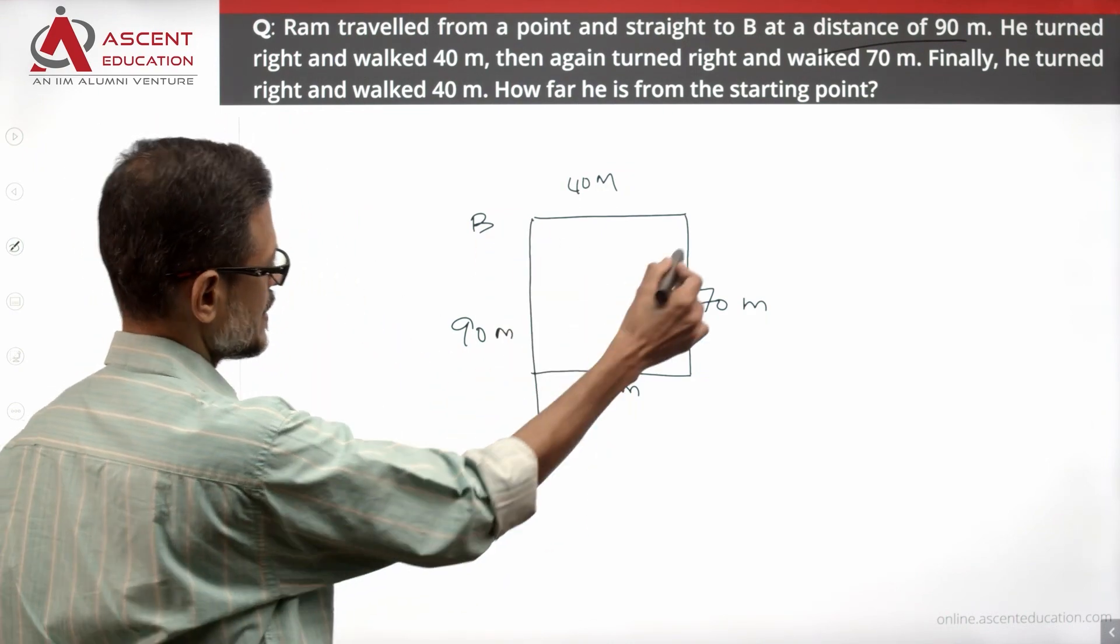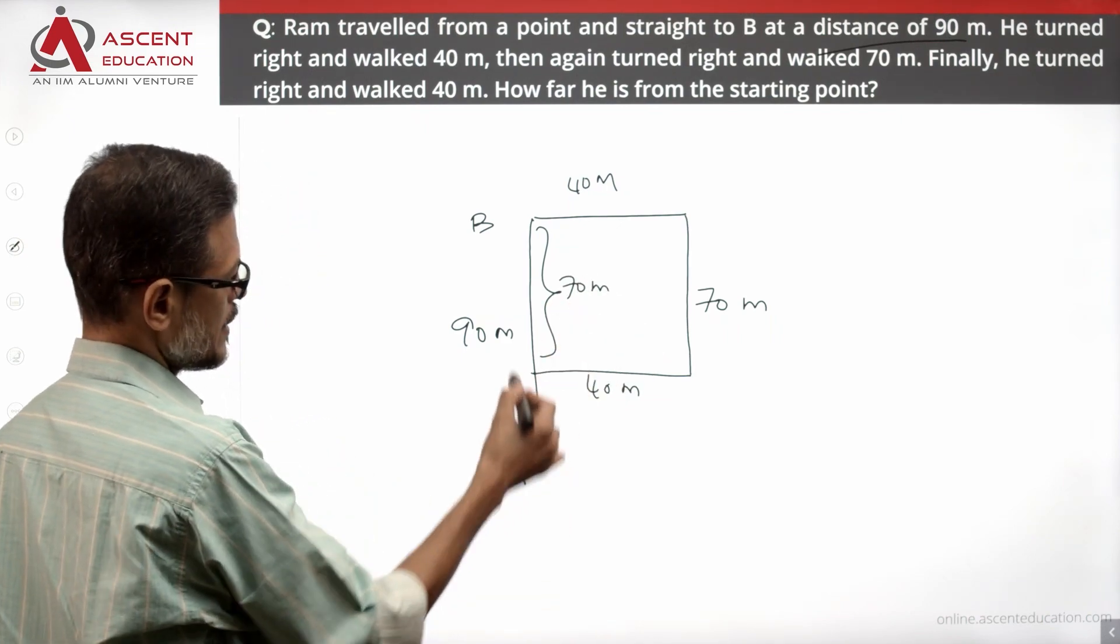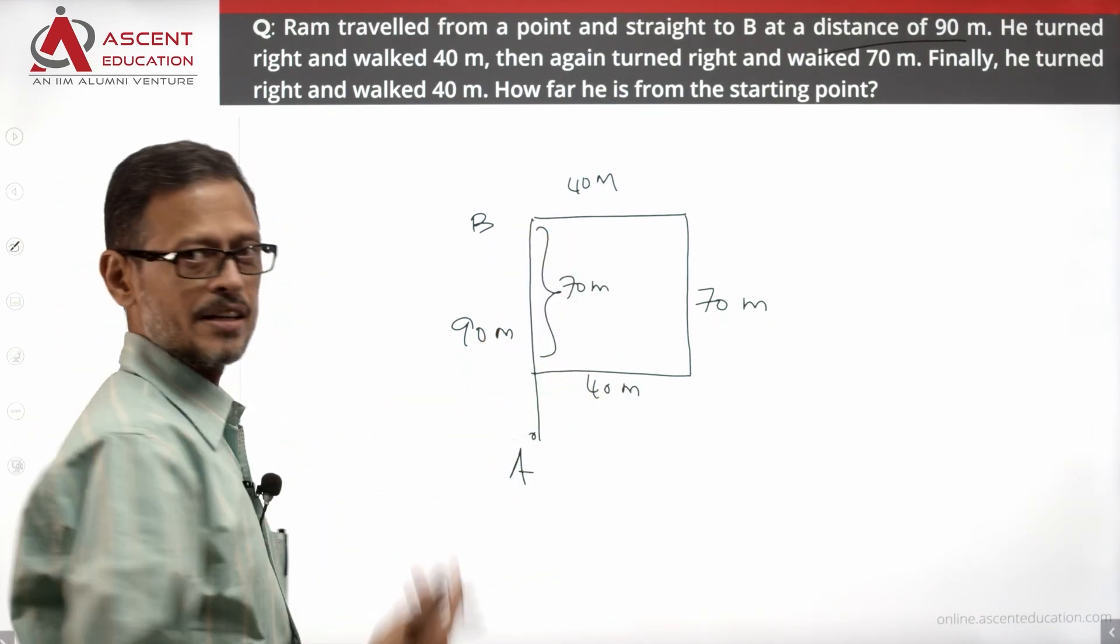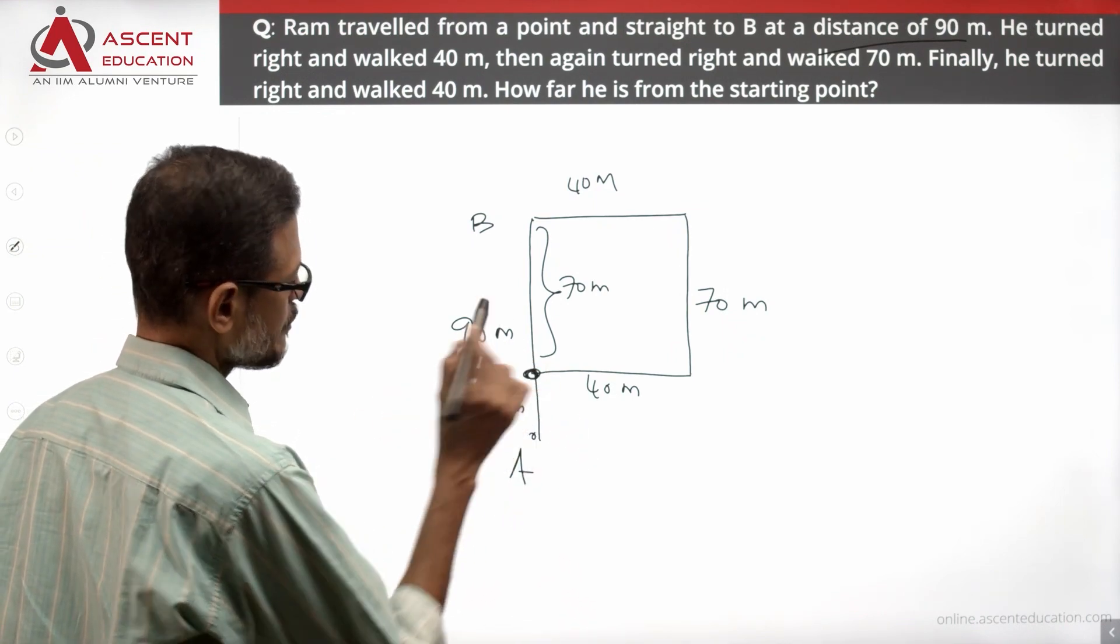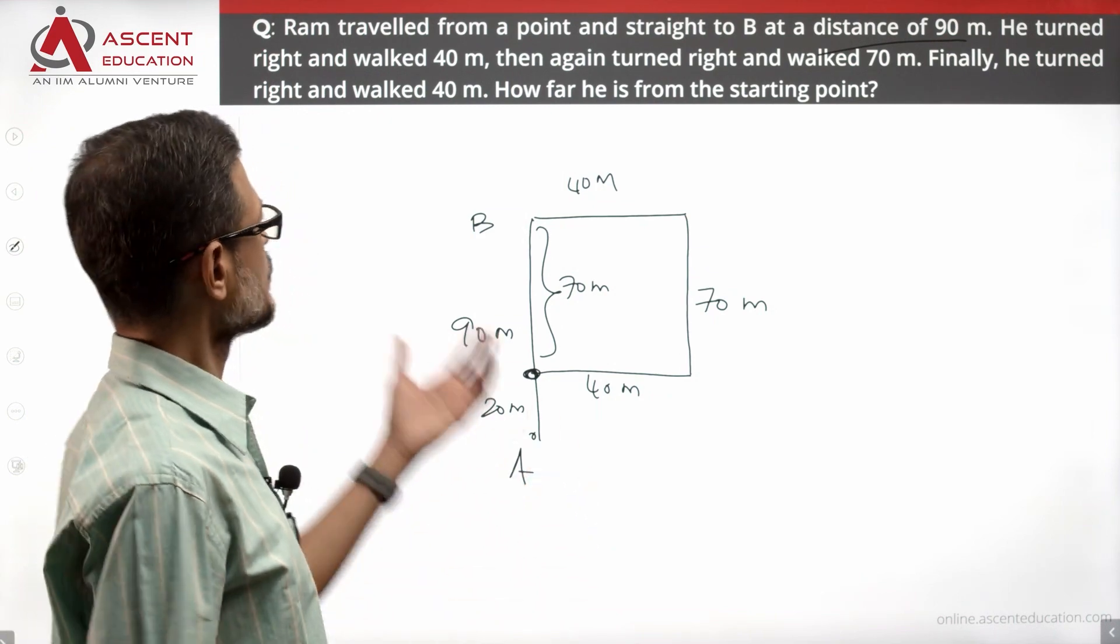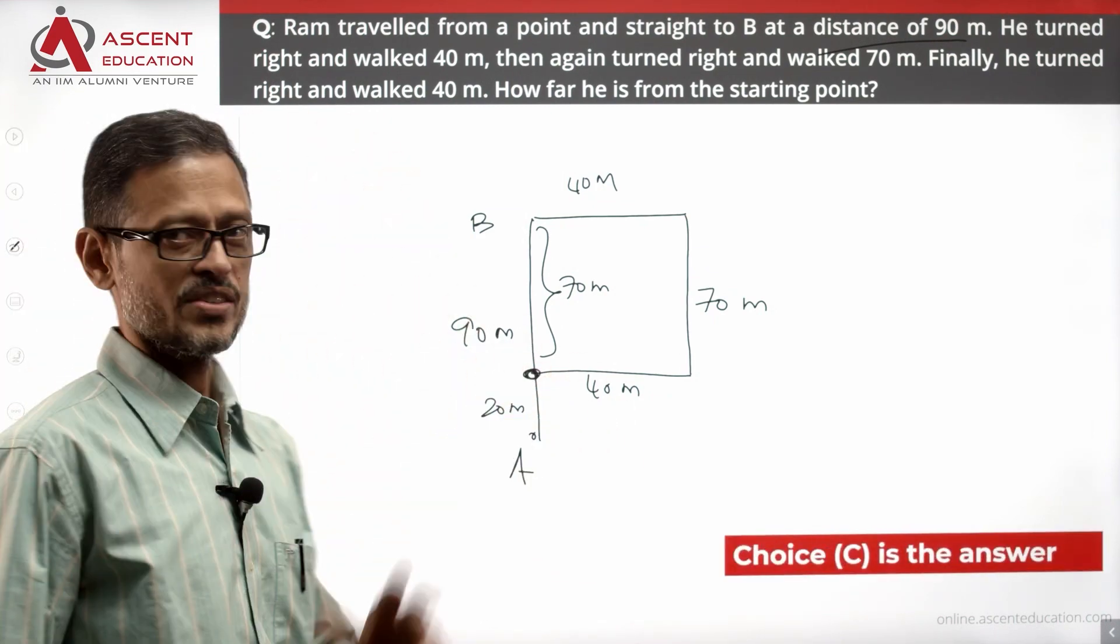This height is the same as this. So this is equal to 70 meters. Of the total distance 90, you subtract 70 meters in this direction, so it is going to be 20 meters from the point where he is standing right now to the starting point. What is the distance? The distance is 20 meters. Correct answer to this is choice C.